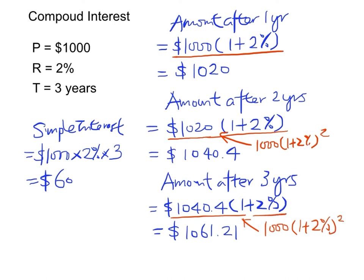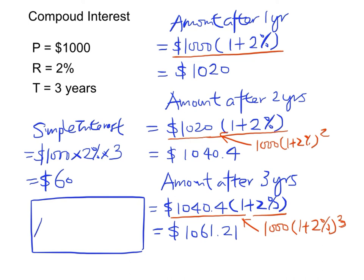If we multiply $1,040.40 by (1 plus 2%) again, the power 2 becomes power 3. Therefore, the amount after three years will be $1,000 times (1 plus 2%) to the power 3. The exponent 3 matches the number of years. So finally, we have the compound interest formula: the amount A equals P times (1 plus R) to the power T. Remember this formula well. If we want to find the compound interest I, we simply subtract P from A.